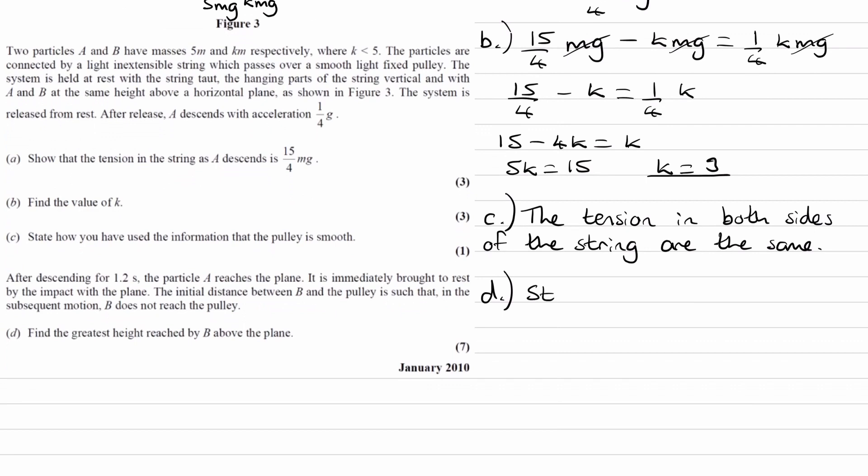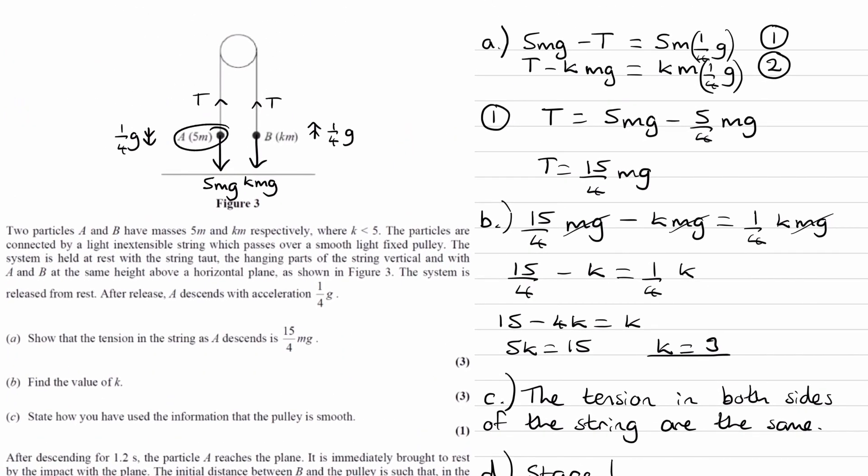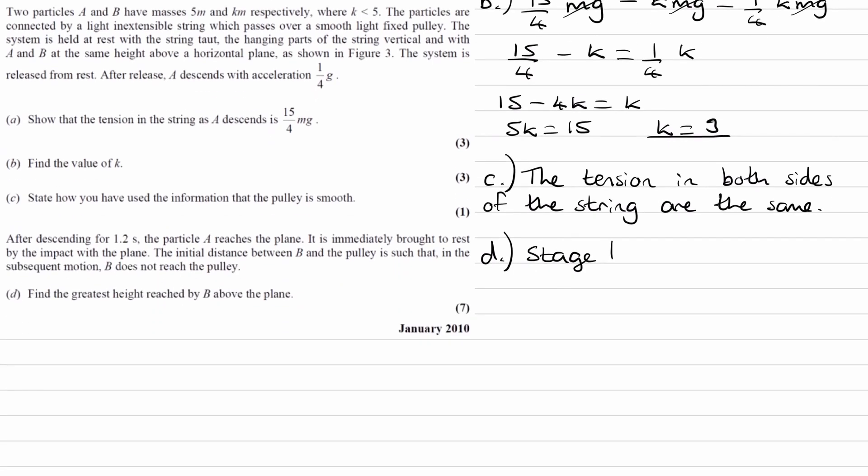So let's start with stage one. So stage one, remember, is when A travels to the ground and then hits it. So let's write out what Suvat quantities that we know. So, we're told the time. The time is 1.2 seconds. That's how long it takes to hit the floor. We know the acceleration is 1/4 g. It's released from rest, so we know what the initial speed is, zero.